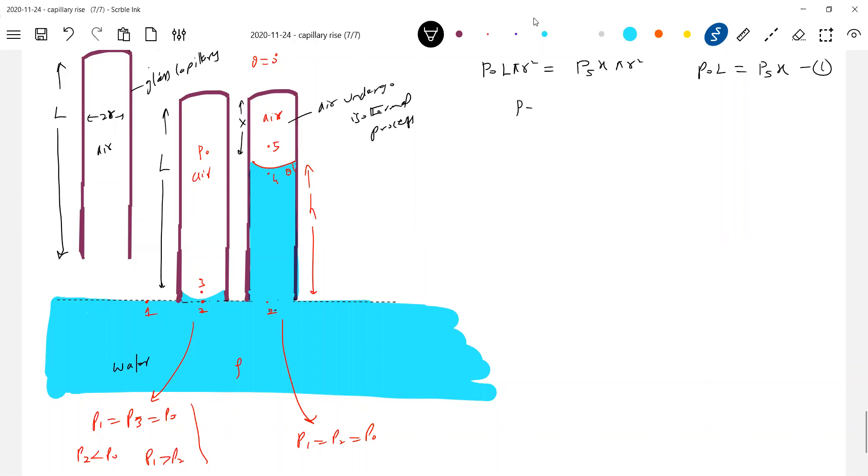Okay, the pressure at phi should be equal to P4 plus 2ST by r. R is the radius of capillary, that I already mentioned. Next, again, after this P5 value, we know it. Now P4 plus rho GH minus P2 equal to 0. What is the pressure at 2? Pressure at 2 should be P naught.